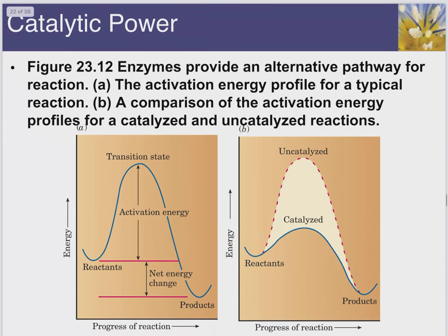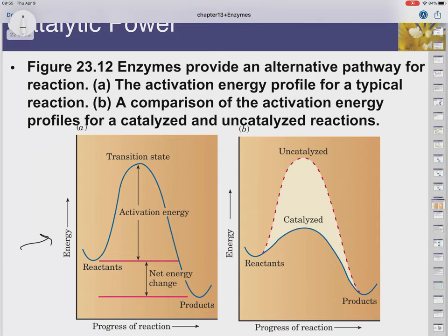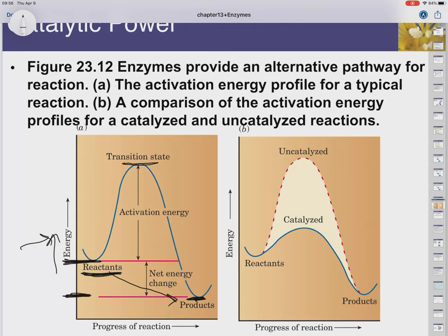The way that we say enzymes work is that they lower the activation energy required for the reaction to take place. This is a typical energy diagram showing the energy of the reactants up here on the energy level. Products are way down here, lower in energy. The fact that reactants turn into products of lower energy is one of the laws of thermodynamics — spontaneous reactions. But before the reactants can become products, they have to go through a transition state, which is usually much higher in energy. The difference between the reactants' energy and the transition state energy is referred to as the activation energy.